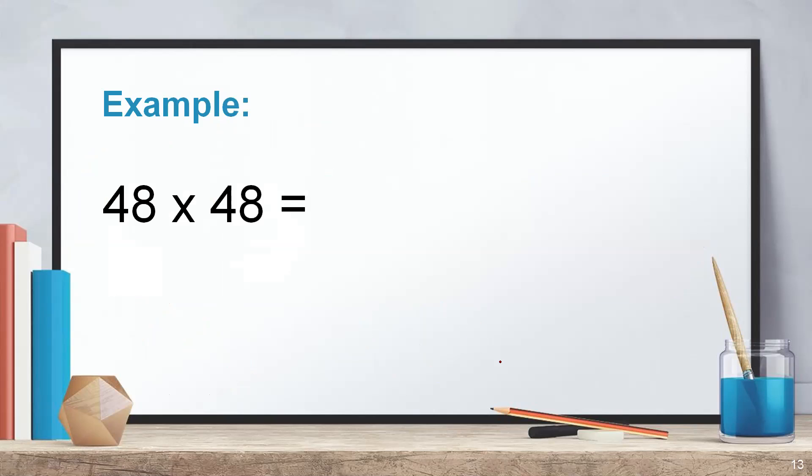Let's take another example, 48. 48, what is the distance from 50? It's going to be minus 2 from 50. Which means you have to subtract from 25. That is, minus 2 plus 25 will be 23. Write the square of the distance. Square of minus 2 is 4. But you have to write it as a 2 digit number. So 48 times 48 is 2,304.